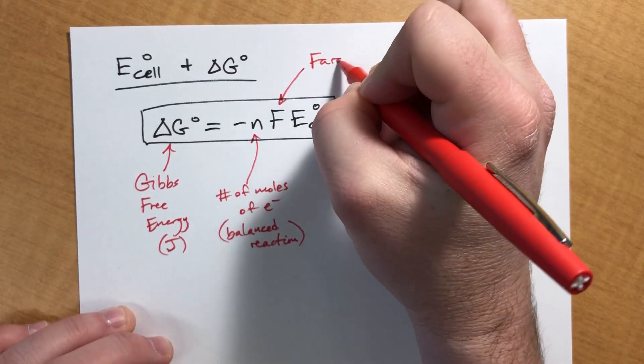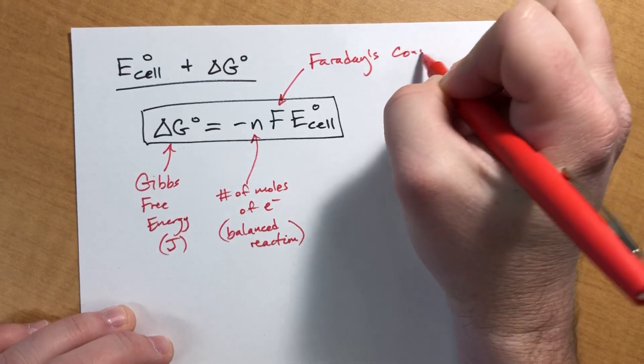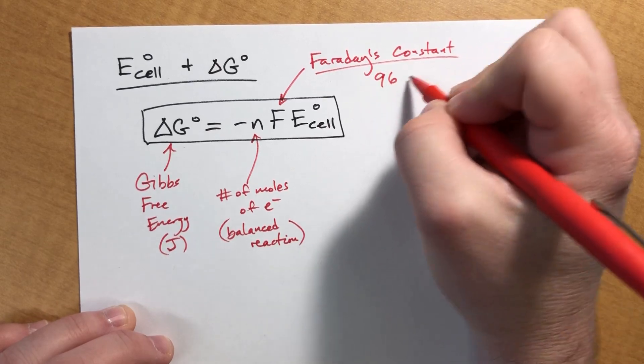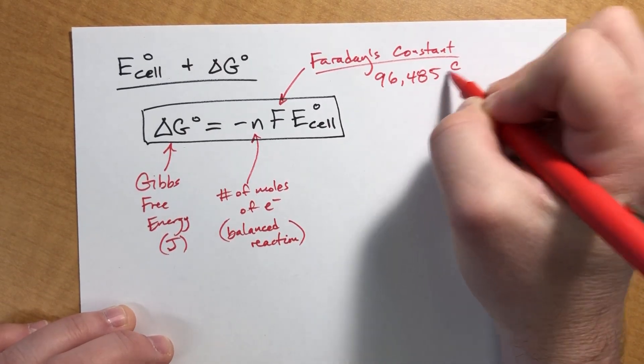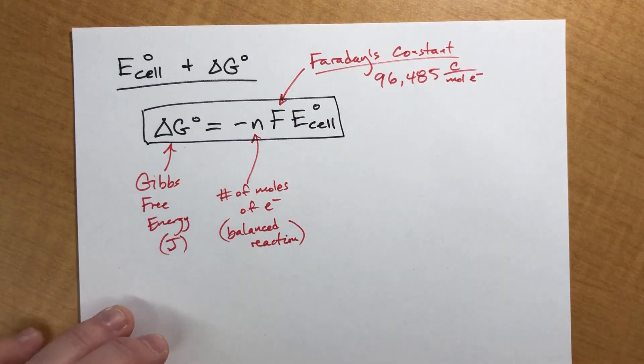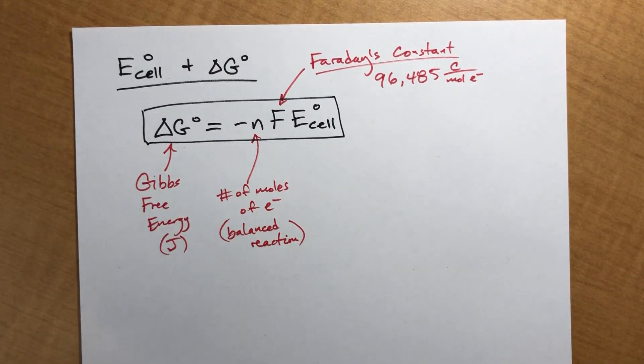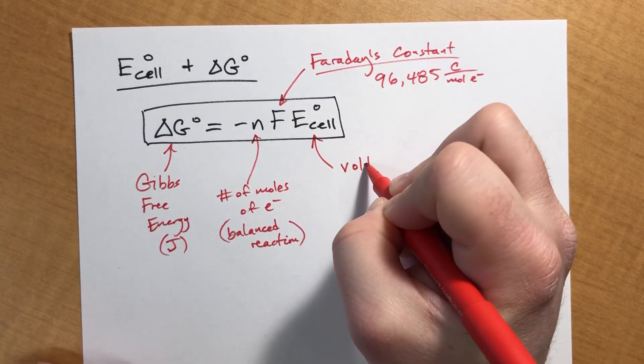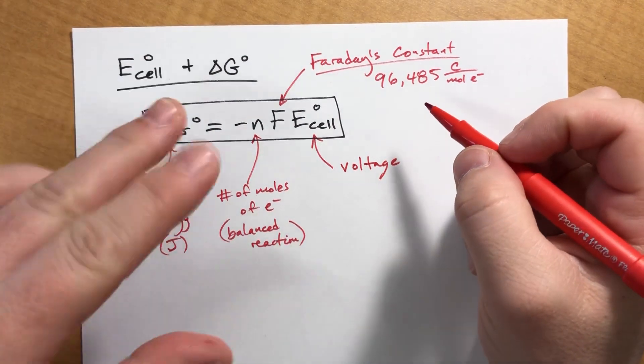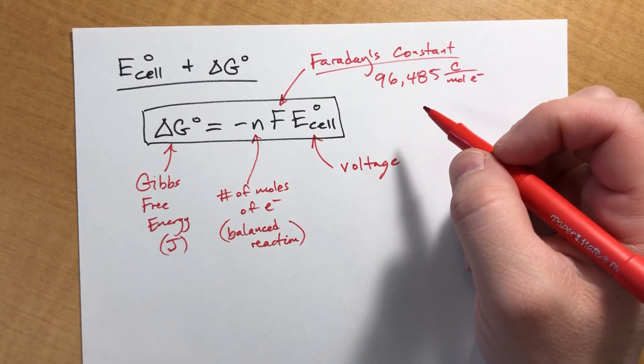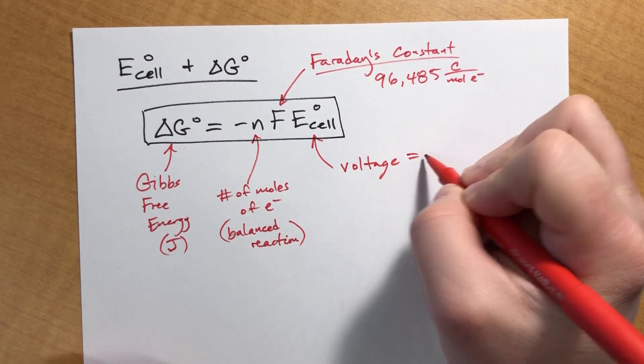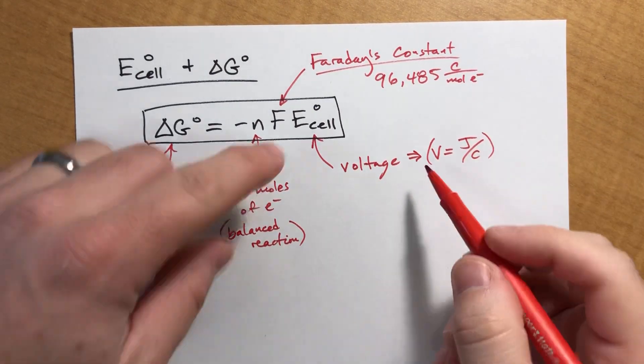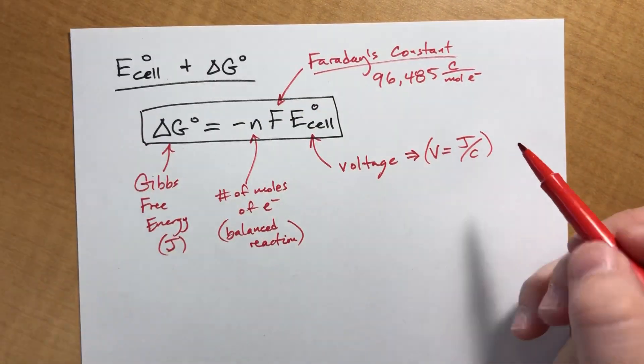F is something called Faraday's constant. Faraday was some physicist guy obsessed with electricity, came up with this constant. And it comes out to 96,485 coulombs per mole of electrons. And N is moles of electrons, so it cancels out nicely. And then this is the voltage, so basically whatever your cell potential is based off table 19.1. And the units on that are volts, which is a joule per coulomb. So your coulombs will cancel out, your moles will cancel out, and you'll end up with joules.